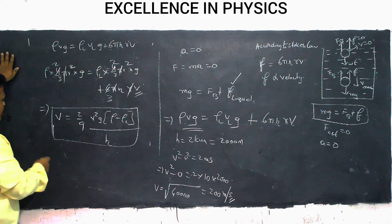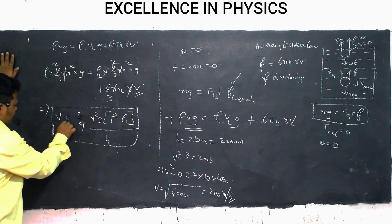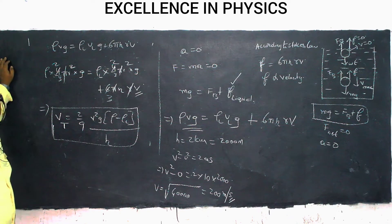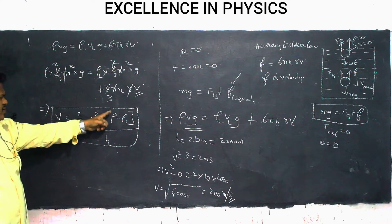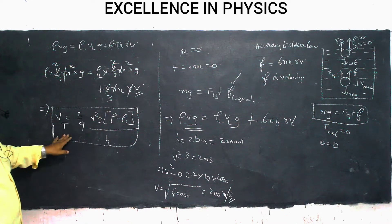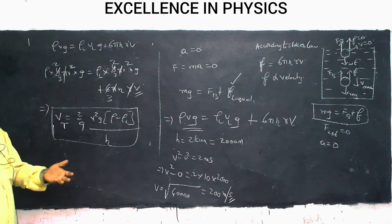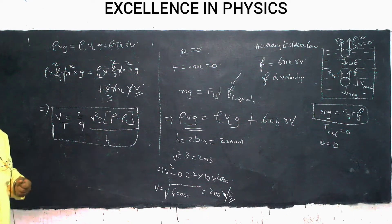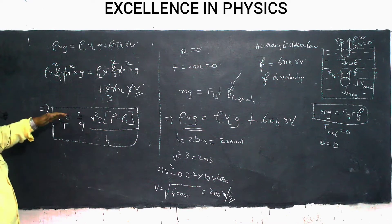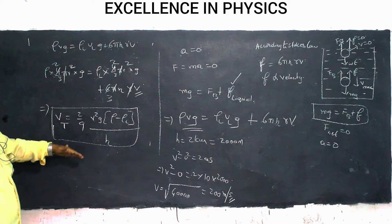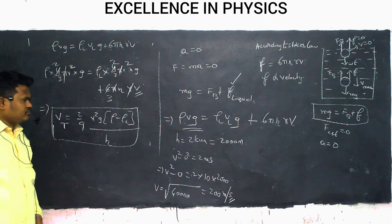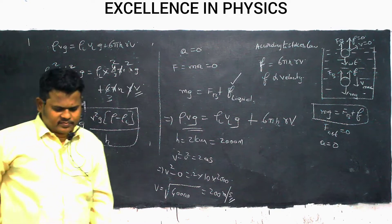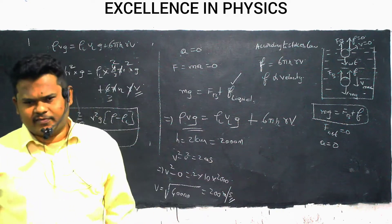This velocity is called terminal velocity. After the body attains this velocity, its velocity will not increase further — the body will continue to fall with the same velocity.